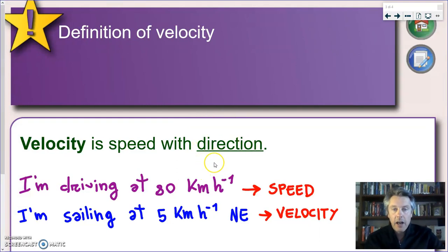And to understand this even better, we'll see another example. Let's look at this sentence. Here it says, I'm driving at 80 kilometers per hour. So, what kind of information am I giving here? I'm giving a number and a unit. That's it. So, this is the speed at which I'm driving.